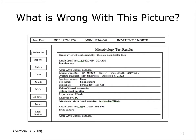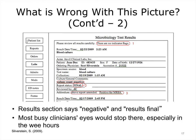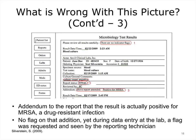Take a look at this mock screenshot. What do you see that is suboptimal or could lead to error? Instead of just programming a highlight for information that should be alerted, the system states there are no indicator flags. The result section says that the result is negative and the result is final. Most clinicians who are busy would likely stop reading here. Then there is an addendum saying that the culture is actually positive for MRSA, a dangerous infection that often spreads in hospitals.